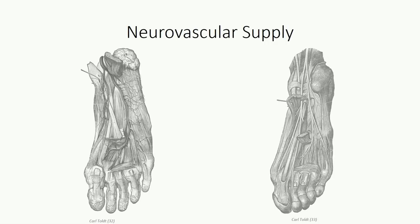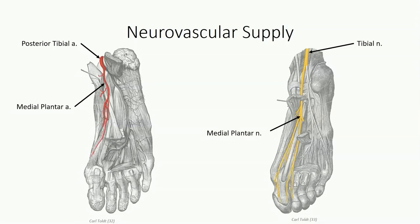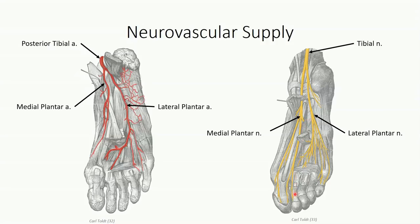Before we leave the plantar area of the foot, we're going to take a look at the neurovascular bundles, which we traced down to the ankle in a previous lesson. Remember that we had the posterior tibial artery and tibial nerve, which entered the foot posterior to the medial malleolus between the tendons for flexor digitorum longus and flexor hallucis longus. The neurovascular bundle divides to give the medial plantar artery and nerves on the medial side and lateral plantar artery and nerves on the lateral side. The medial plantar nerve provides muscle branches to flexor digitorum and the first lumbrical, and gives off common digital branches that split into proper digital branches for cutaneous innervation along the middle three and a half digits. It tends to give more cutaneous distribution and less muscular distribution compared to the lateral branch.